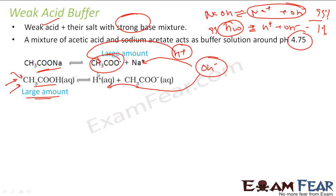So we have readily free ions to absorb extra H⁺ or OH⁻ ions — that's why it's a buffer. If you add OH⁻ ions, H⁺ will take them and form water. If you add H⁺ ions, CH₃COO⁻ will absorb them to form CH₃COOH. So even if you add a large amount of H⁺, it can withstand it — because it's a weak acid buffer.